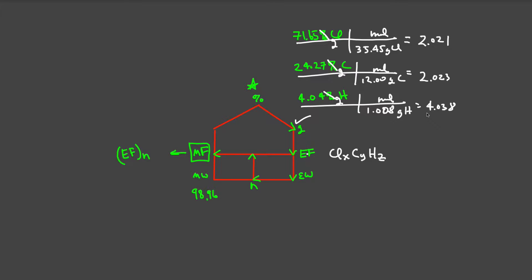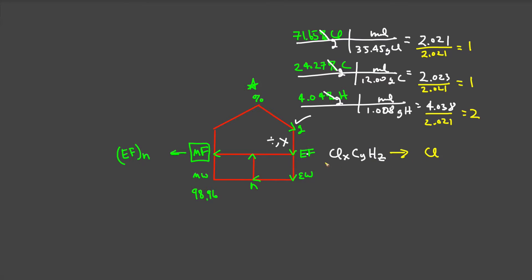We now have the relative mole ratios of each element. We divide through by the smallest number of moles — in this case 2.021 — and then multiply if needed to get whole numbers. This gives us 1 for chlorine, a number very close to 1 for carbon, and a number very close to 2 for hydrogen. So our empirical formula is ClCH₂. This material weighs 1 chlorine, 1 carbon, and 2 hydrogens, totaling 49.47 grams per mole.